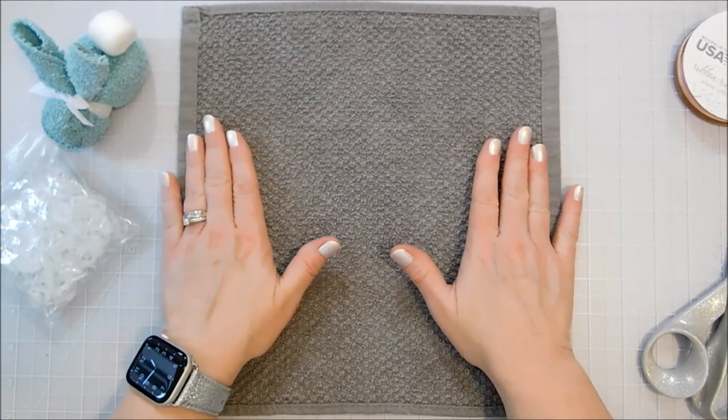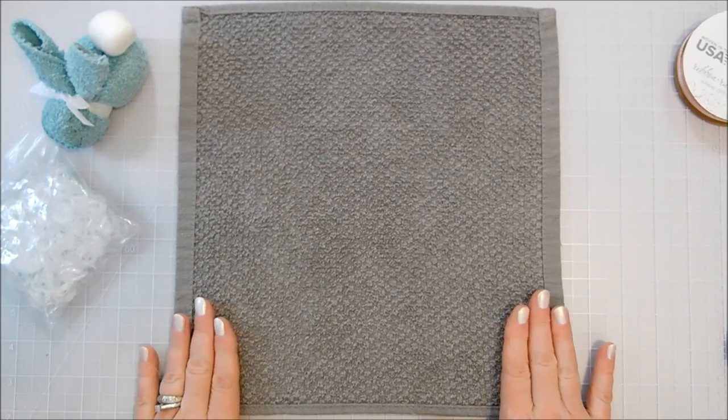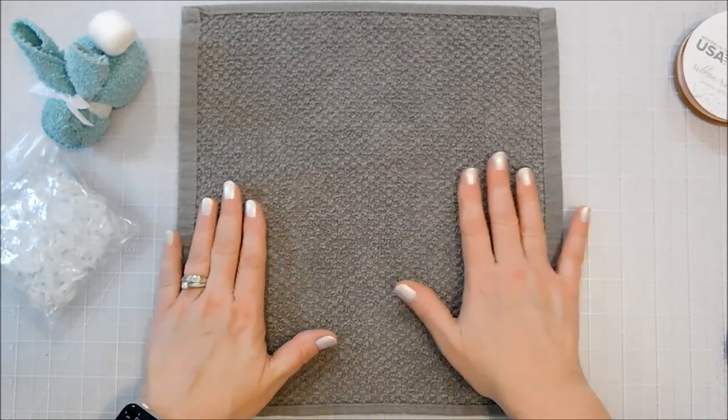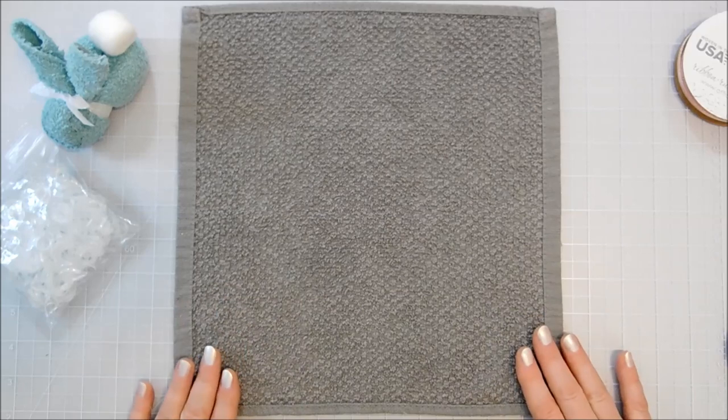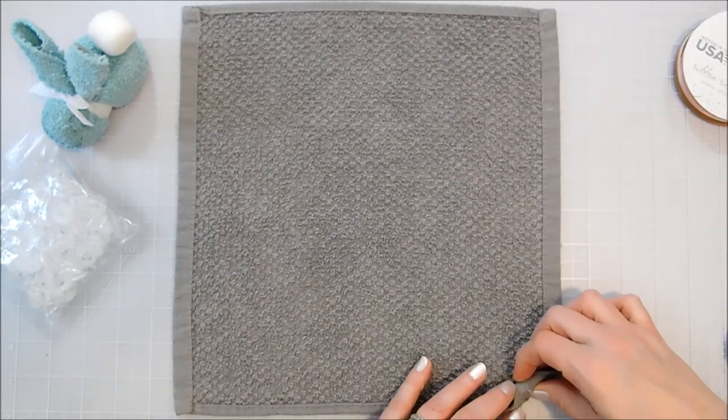We're going to do a gray bunny here and I've just got my washcloth. I kind of ironed it flat just to get the creases out from where it was folded and I'm going to roll from one corner.